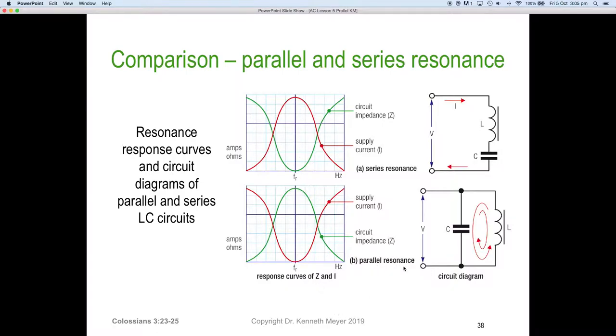But for parallel resonance, that's the bottom half of the page, you can see everything changes in exactly the opposite direction. At resonant frequency, the supply current goes very low. You can see the current drops off at resonance. But the impedance, the green line, goes very, very high.